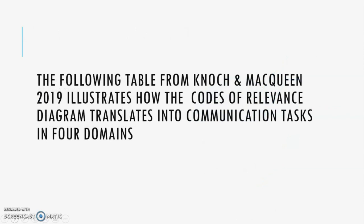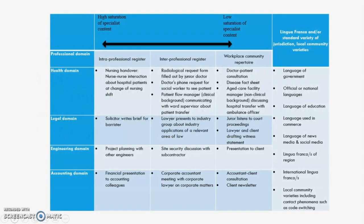A table from Nock and McQueen illustrates how the codes of relevance diagram translates into communication tasks in four domains. Looking at the legal domain, an intraprofessional register might involve a solicitor writing a brief for a barrister — professional writing to another professional using very technical language. The interprofessional register is when a lawyer presents to an industry group about industry applications of a relevant area of law. Workplace community repertoire is when a juror listens to court proceedings, or a lawyer and client discuss a witness statement — language cast in ways non-legal people can understand.